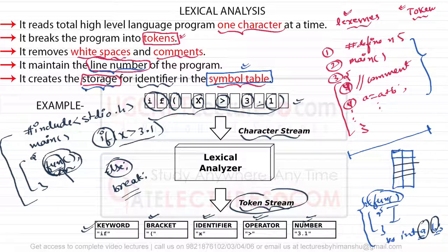The lexical analyzer separates characters from the source language into groups that logically belong together, which are known as tokens. The usual tokens are keywords, identifiers, operators, and special symbols. We will discuss keywords, identifiers, operators, and special symbols in the next video, along with more examples for the lexical analyzer.